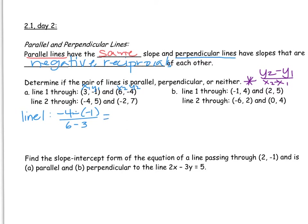In the numerator, we have that double negative. It changes to positive. Negative 4 plus 1 equals negative 3. In the denominator, 6 minus 3 is positive 3, and that reduces to negative 1. That's the slope of line 1.